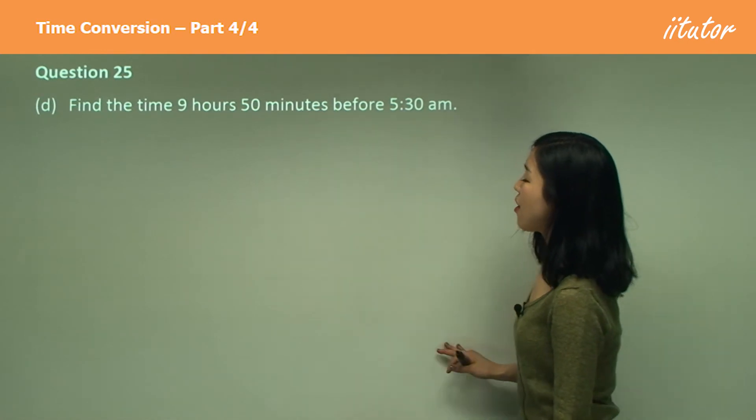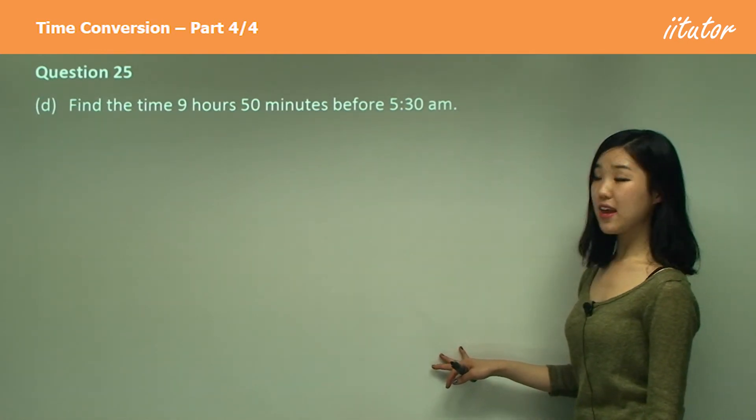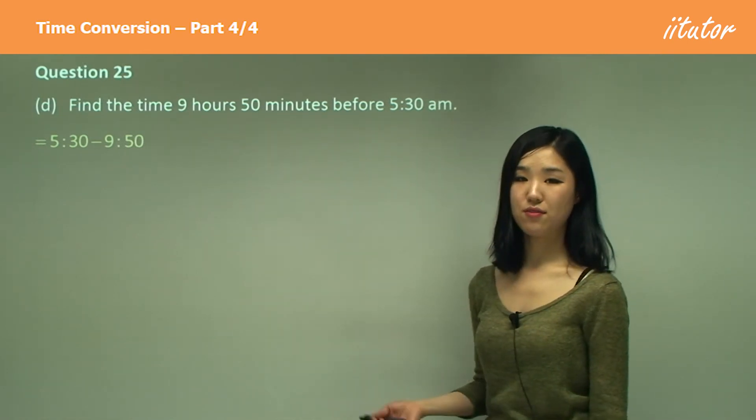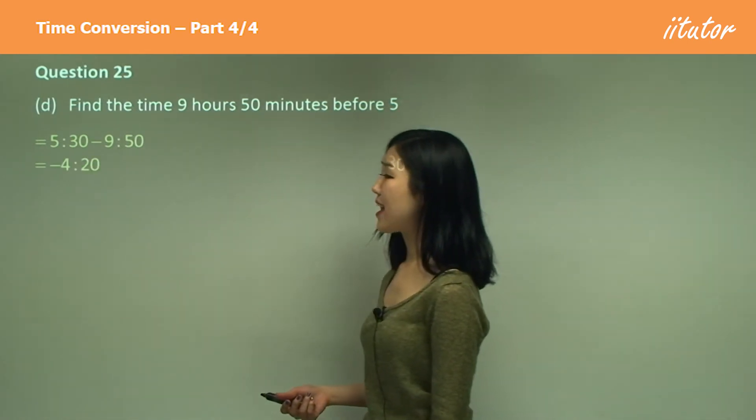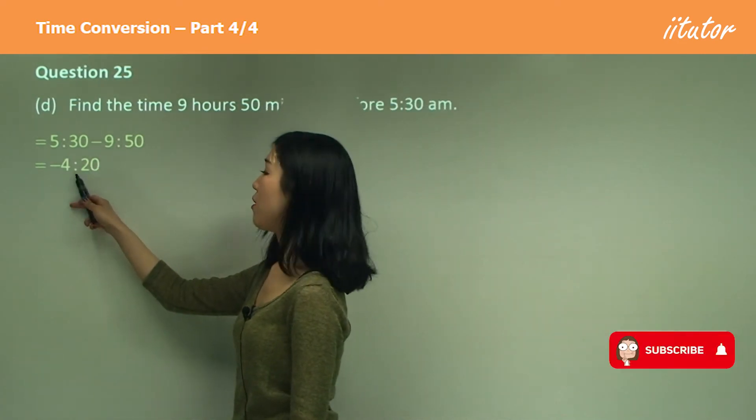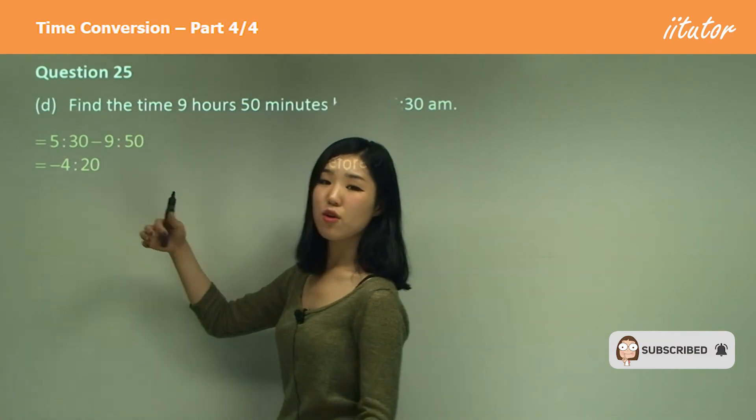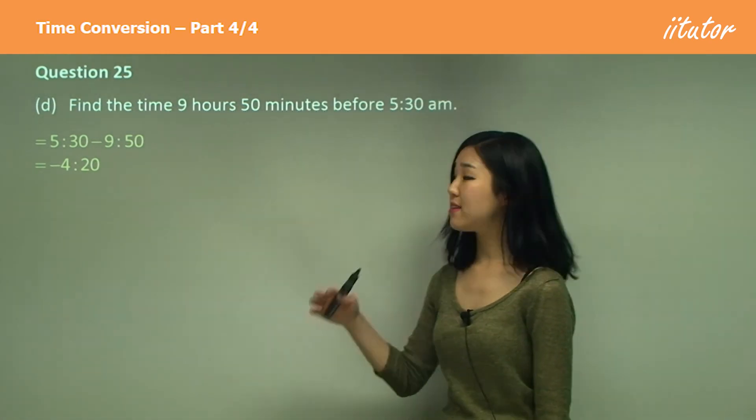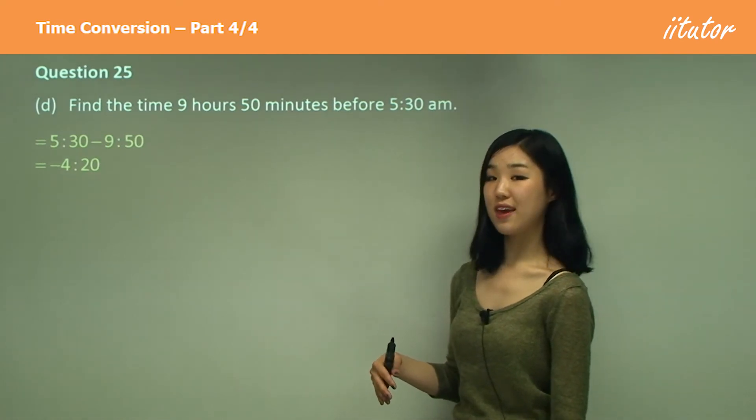And 9 hours 50 minutes before 5:30 a.m. We do 5:30 minus 9:50, which gives you a negative number. Because 5 minus 9 is negative 4. And 30 minus 50 is negative 20. So it's a negative number. It goes backwards, doesn't it? So what does negative 4:20 indicate?